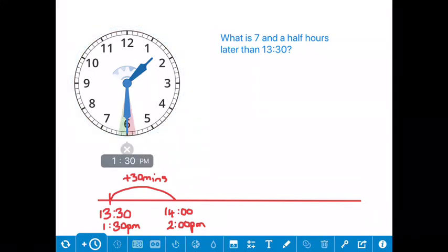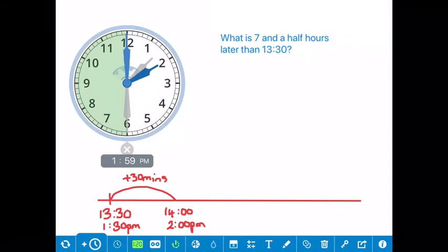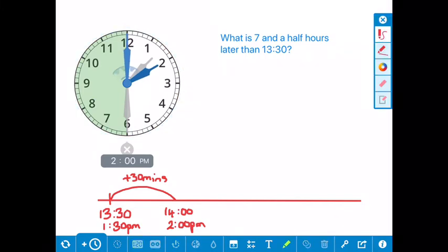Okay two o'clock and we can have a quick look on our clock here. If I go half an hour that's taken me up to two o'clock. Then I'm going to go my seven hours. So two add seven is actually quite an easy one to do in one jump. I'm just going to do it all as one go and it's going to take me to 21, 9 o'clock, 9 p.m. 2 add seven is 9, 14 add seven is 21.